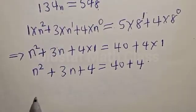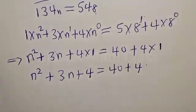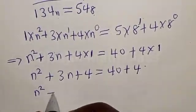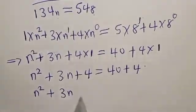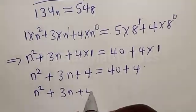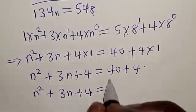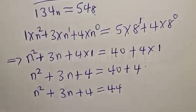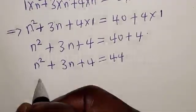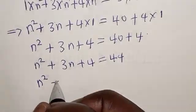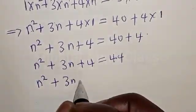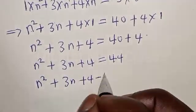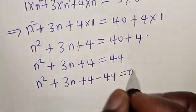Therefore, we have n squared plus 3n plus 4, is equal to 40 plus 4, that is 44. Then we have n squared plus 3n plus 4 minus 44 is equal to 0.